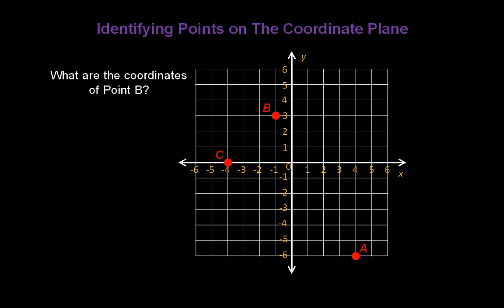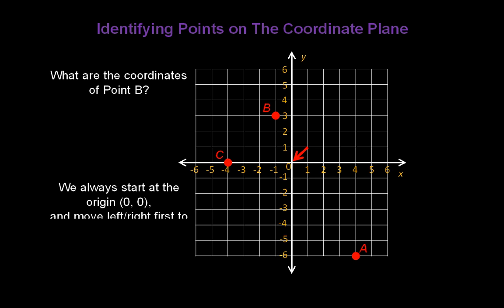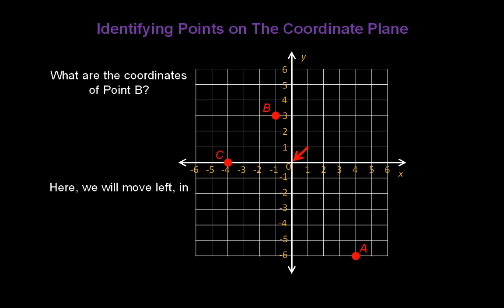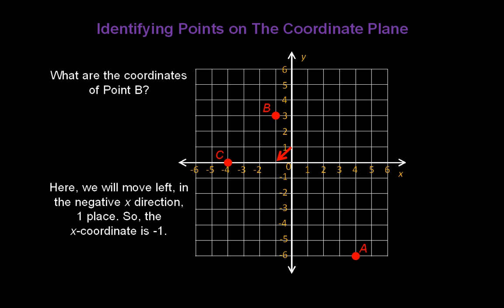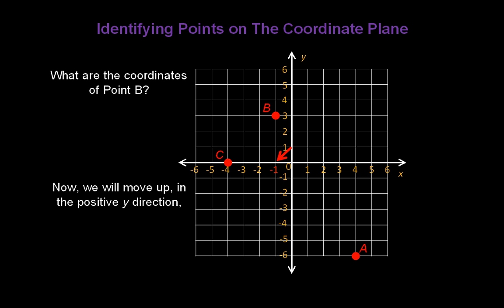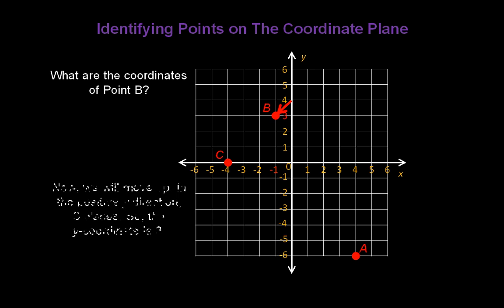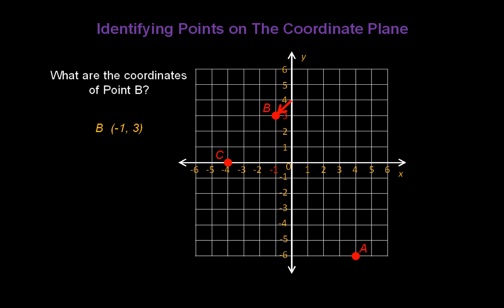What are the coordinates of point B? Let's start at the origin, (0, 0), and move left or right first to line up with our point. Here, we're going to move to the left in the negative x direction, 1 place, so the x-coordinate is -1. Now we're going to move up in the positive y direction, 3 places, so the y-coordinate is 3. Point B is (-1, 3).